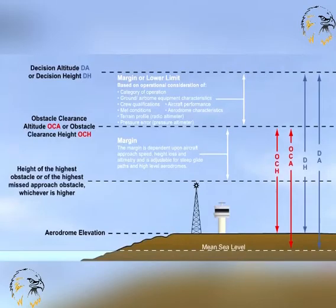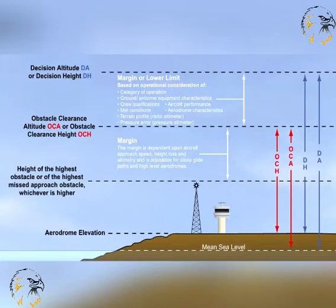For each approach, an OCA or H is calculated in the development of the approach procedure and published on the instrument approach plate. The vital factor is that the minima can only be deliberately exceeded when the visual criteria continue to be achieved.